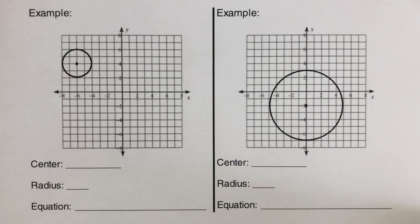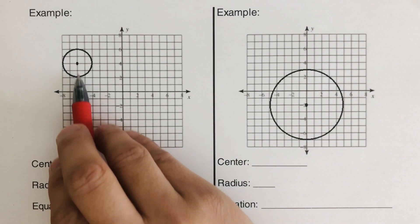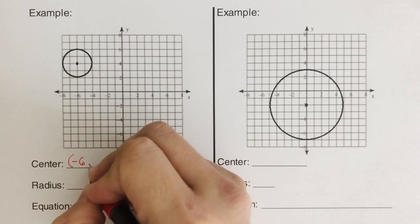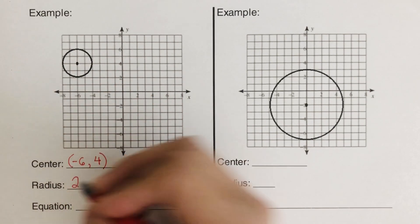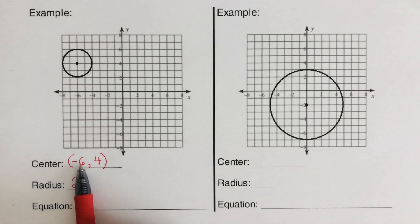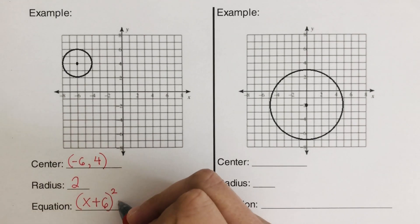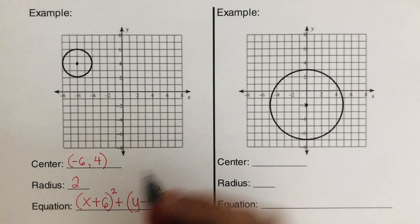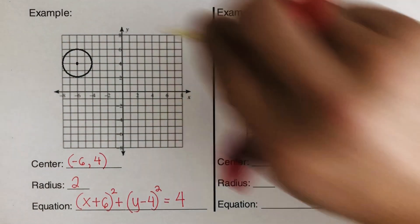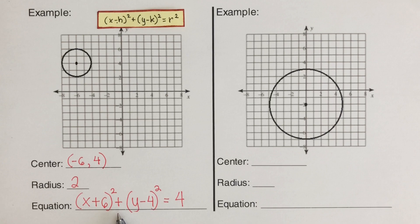Let's do the next example. I encourage you to pause the video and try this on your own first. The center for this circle is (-6, 4). The radius — counting in any direction — is 1, 2, so the radius is 2. Using the switch-and-switch trick: (x + 6)² + (y - 4)² = 2² = 4. Did you get the same answer? Perfect.